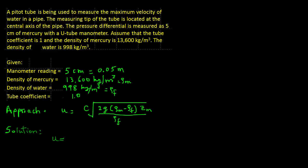We will substitute the various values in this equation. U will equal 1.0, which is the tube coefficient. Then we have in parenthesis 2 times 9.81 for acceleration due to gravity in meters per second squared. Density for the manometer fluid, mercury, is 13,600.